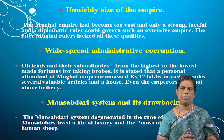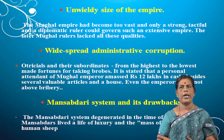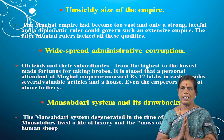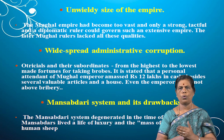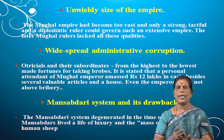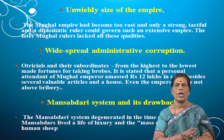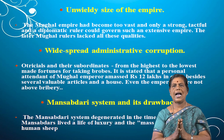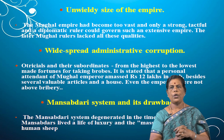Widespread administrative corruption was another reason. The Mughals — especially Akbar — were famous for their administration. But under the later Mughals, officials from the highest to the lowest made fortunes by taking bribes. It is stated that a personal attendant of a Mughal emperor amassed 12 lakhs in cash besides several valuable articles and a house. Even the emperors were not above bribery.